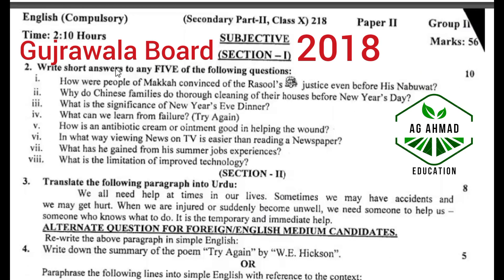Gujranwala Board subjective type paper, Group 2. Write short answers for any five of the following questions: How are the people of Makkah convinced? Unit 1. Why do Chinese families do thorough cleaning? Unit 2. What is the significance of New Year's Eve dinner? Unit 4. What can we learn from failure? Unit 3. How is an antibiotic cream used? Unit 4. In what way does viewing news help? Unit 6. What has he gained from his summer experiences? Unit 7. What is the limitation of improved technology? Unit 12. Translate the following paragraph into Urdu: 'We all need help at times.' Unit 4, paragraph 1.